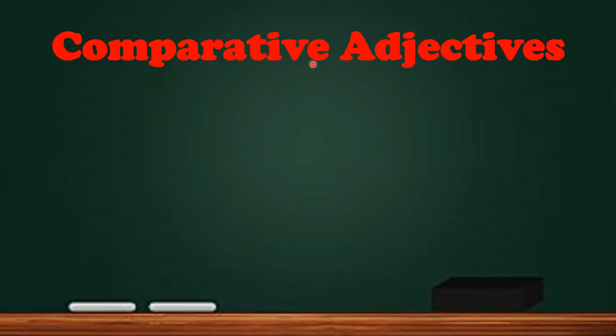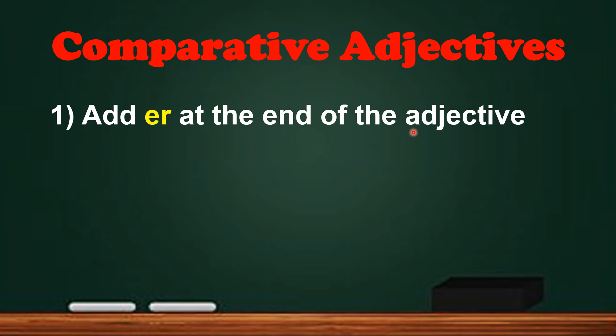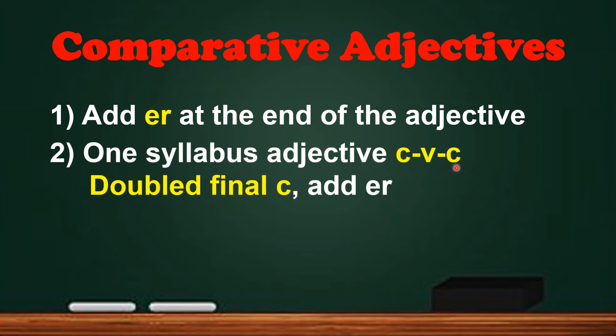Before we move on to the second activity, we are going to do a review on the comparative adjectives. Here are some notes about comparative adjectives. If we want to write the comparative adjective, we have to add ER at the end of the adjective. The second rule is, when we see one syllable adjective in CVC form, we have to double the final consonant and add ER. The third rule is, when we see the adjective ending with Y, we have to remove the Y and add IER. For more information about comparative adjectives, you can watch back the previous video that I have posted and the link has been provided in the description box below.